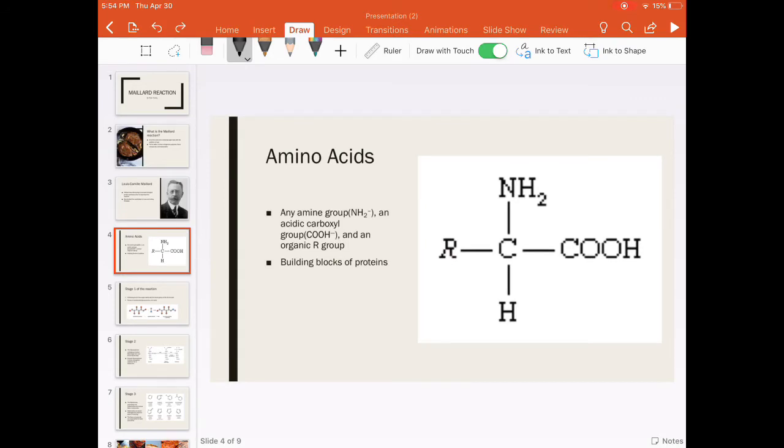Amino acids are the basic building blocks of protein molecules. They consist of a central carbon bonded to an amine group (NH2), an acidic carboxyl group (COOH), a hydrogen, and an organic R group.